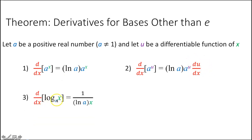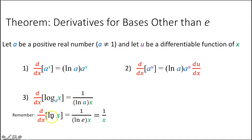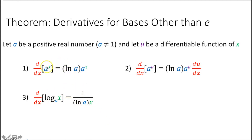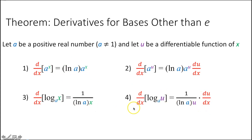The derivative d/dx of log base a of x is equal to 1 over (ln(a) times x). This parallels the derivative of ln(x), which is 1 over (ln(e) times x), equaling 1 over x. Since we're not using log base e anymore, we use log base a and must write the full expression. We need to memorize this. And again, if x is instead a function u, we use the chain rule: the derivative of log base a of u is 1 over (ln(a) times u) times the derivative of u.